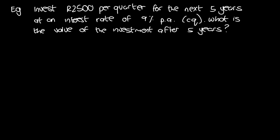Let's look at this example: invest 2500 rand per quarter for the next five years at an interest rate of nine percent per annum compounded quarterly. What is the value of the investment after five years?